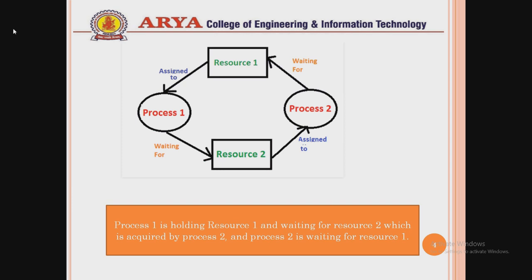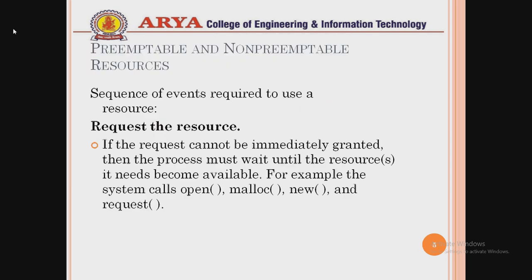In this diagram, circles represent processes and rectangular boxes represent resources. Process 1 is holding Resource 1 and waiting for Resource 2. Resource 2 has already been acquired by Process 2, and Process 2 is waiting for Resource 1. This circular waiting condition is known as deadlock.